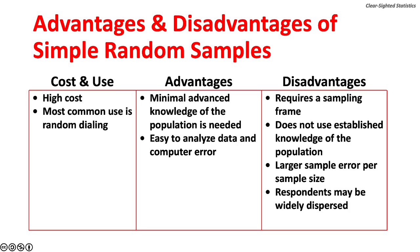Simple random samples can be expensive because you need a sampling frame, which is the list of all elements in the population. The most common use is random phone dialing. Advantages include minimal advanced knowledge of the population needed and ease of data analysis. Disadvantages include requiring a sampling frame, not using established knowledge of the population, larger sampling error per sample size, and respondents may be widely dispersed.